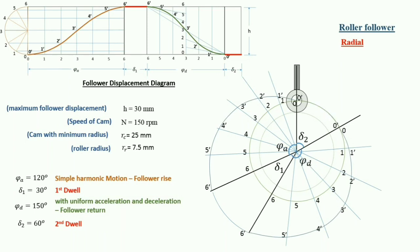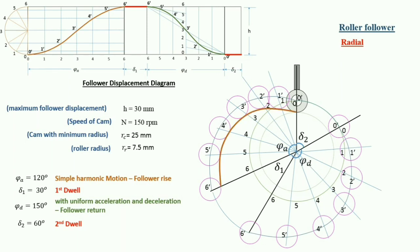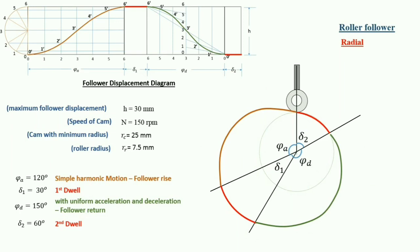We draw a circle on each marked point with radius 7.5 mm (the roller radius). For phi A, the cam profile is drawn as a tangent to all these circles. For delta 1 this is an arc, for phi D we draw a tangent, and for delta 2 that section is also an arc. This completes the final cam profile.